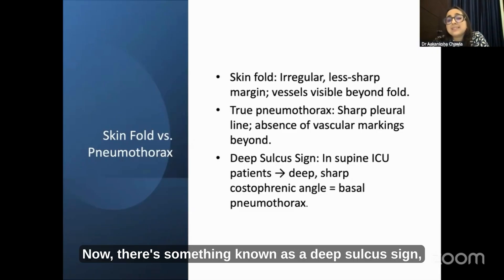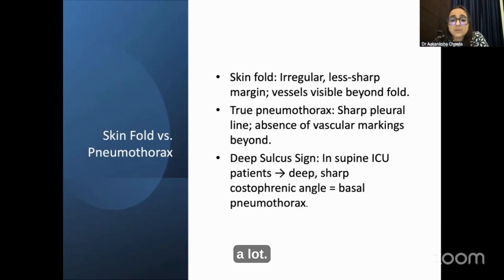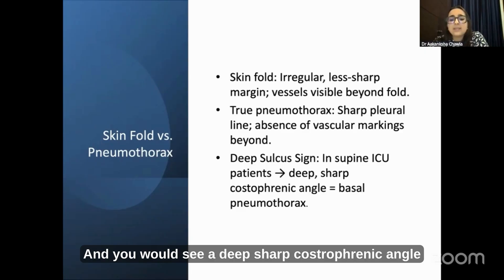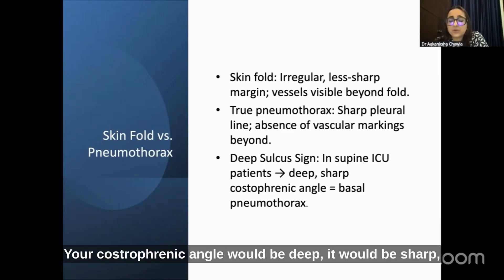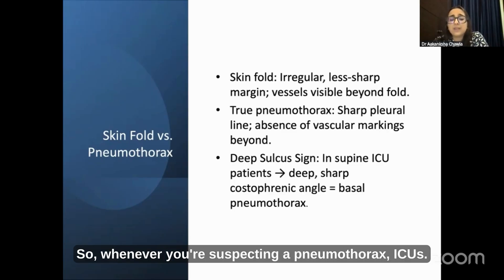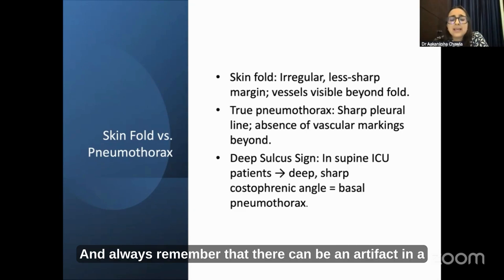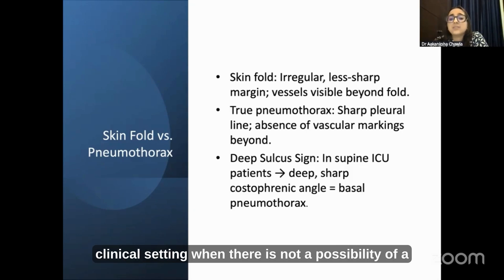The deep sulcus sign is generally seen in supine X-rays in ICUs. You would see a deep sharp costophrenic angle with a basal pneumothorax — the costophrenic angle would be deep, sharp, and devoid of vascular markings. Whenever you suspect a pneumothorax, remember that there can be an artifact in a clinical setting where there is not actually a pneumothorax.